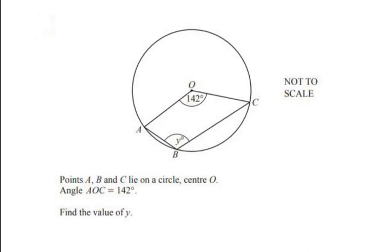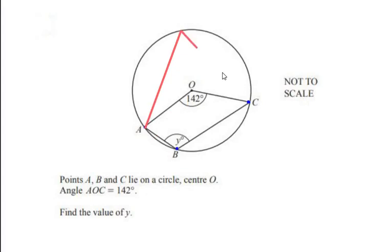Points A, B, and C lie on a circle with center O. Angle AOC is 142 degrees. We have to find out the value of y. To start with, let us make some construction for this given example — let us add a point D on the circumference of the given circle. The angle at the center is 142 degrees.